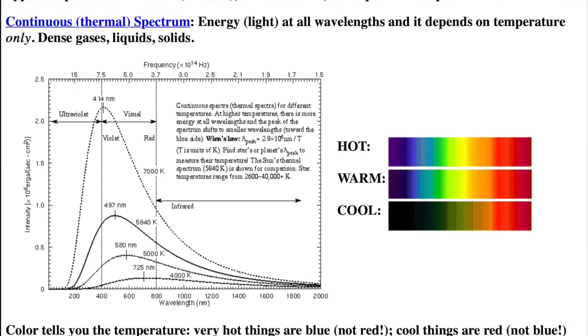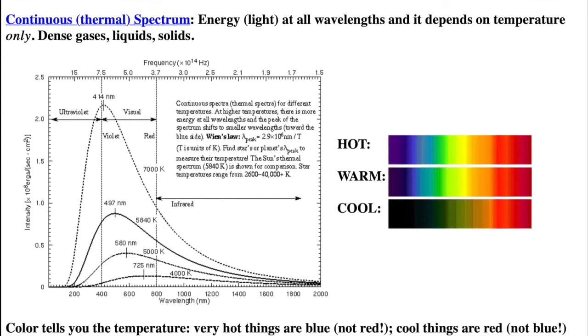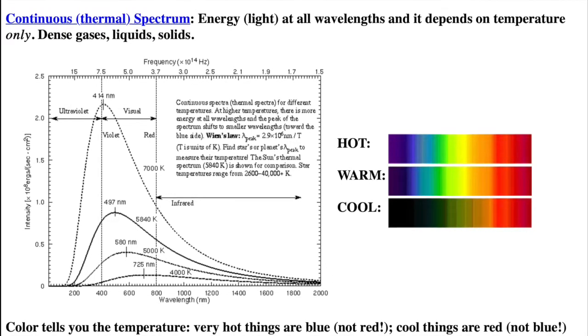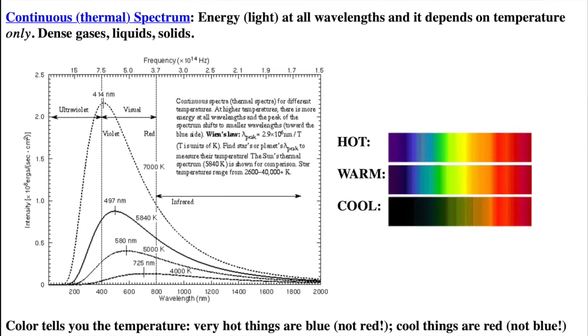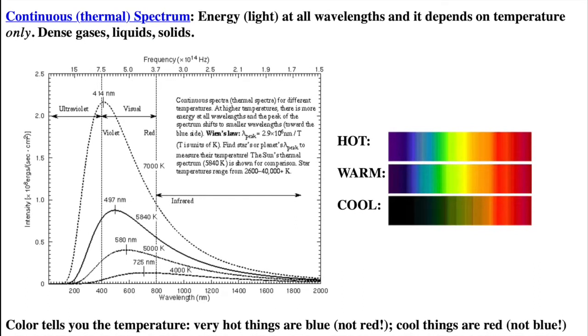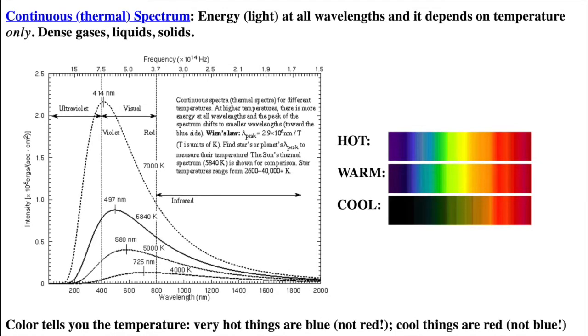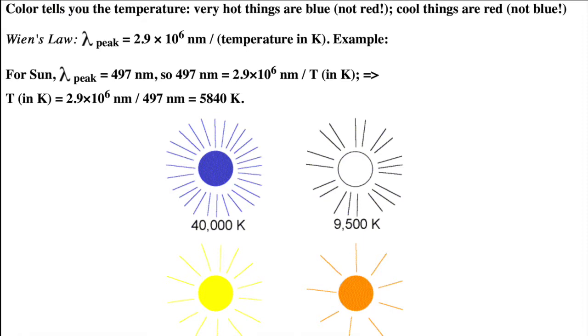The pictures show two ways of displaying a spectrum, either with a graph or an image. As an object's temperature is raised, more shorter wavelength light is produced, and the object gets brighter, more intense at all wavelengths. The color tells you the temperature. Very hot things are blue, not red, and cool things are red.